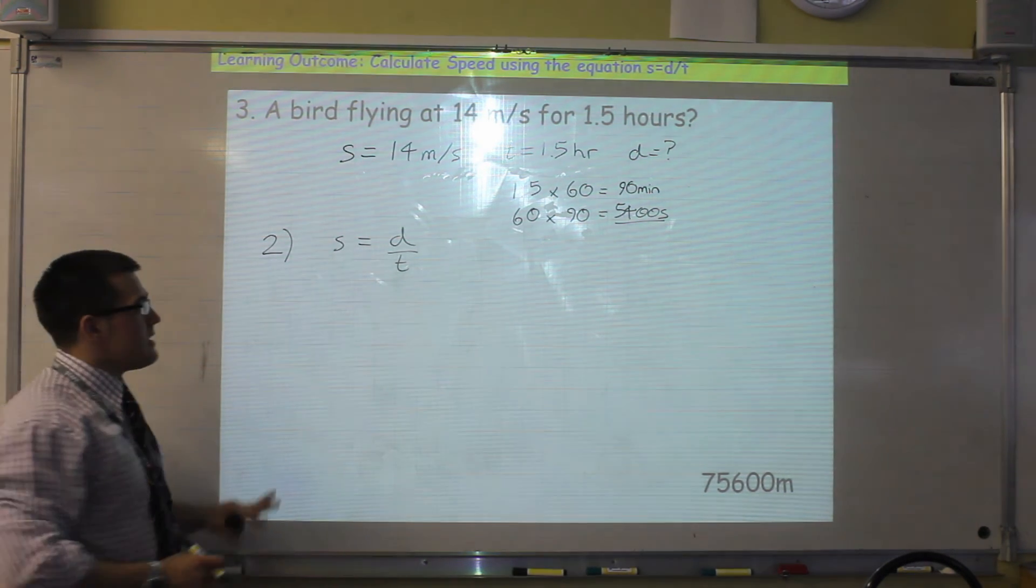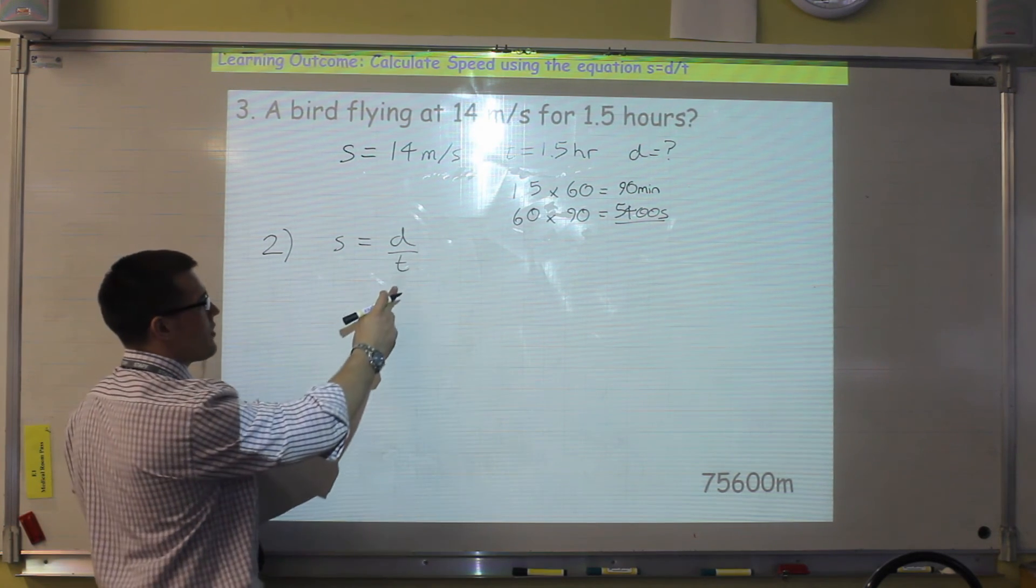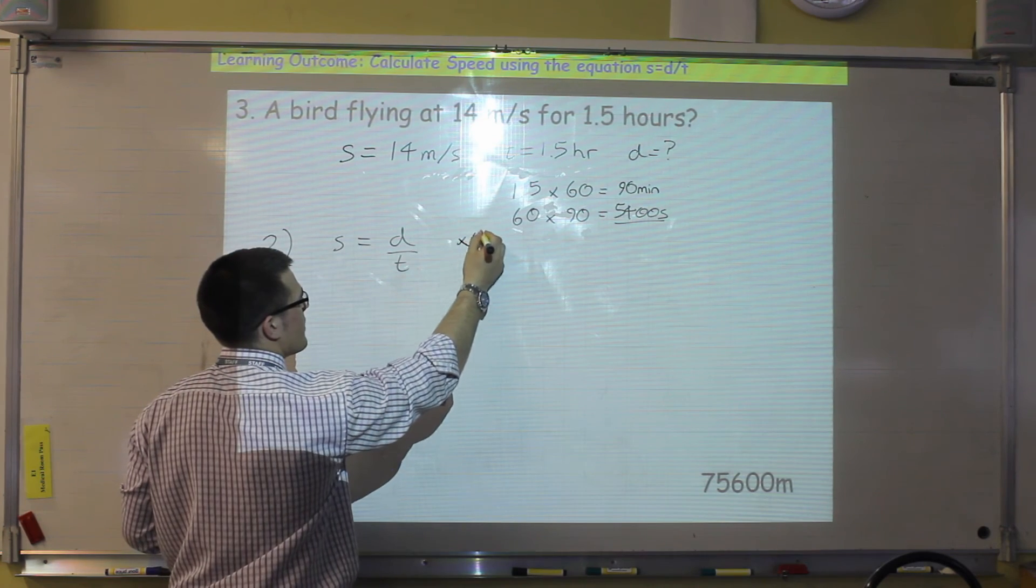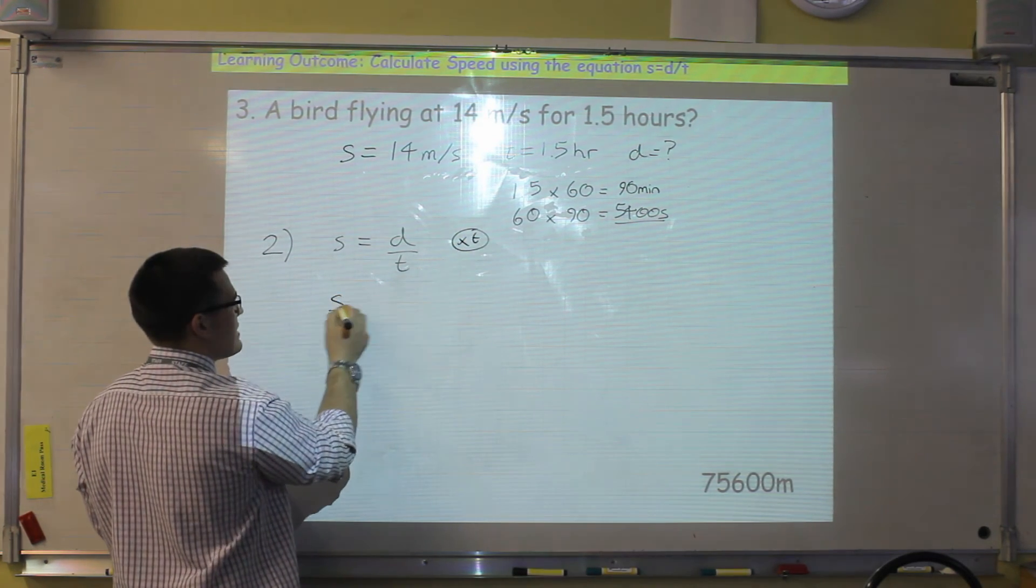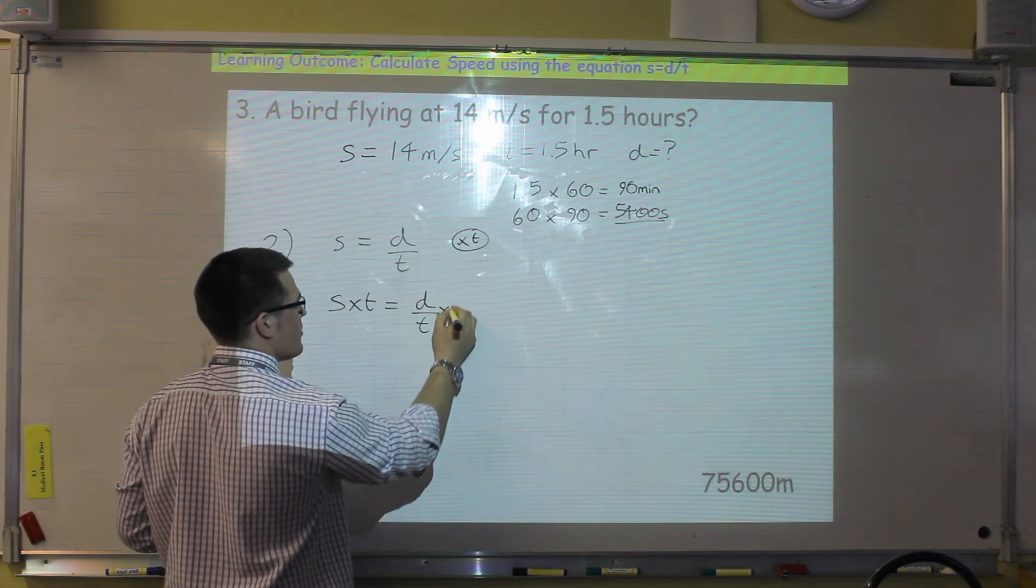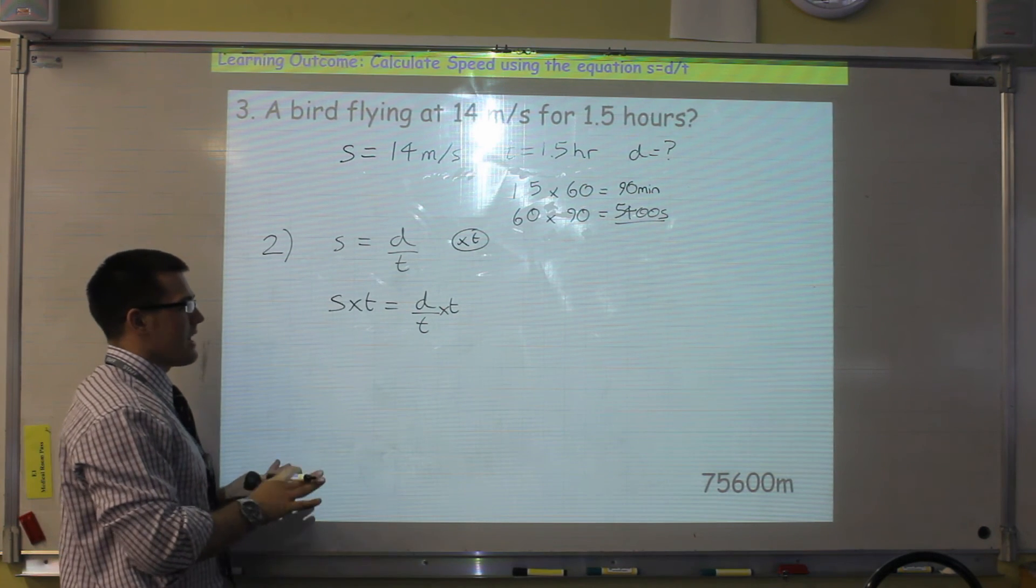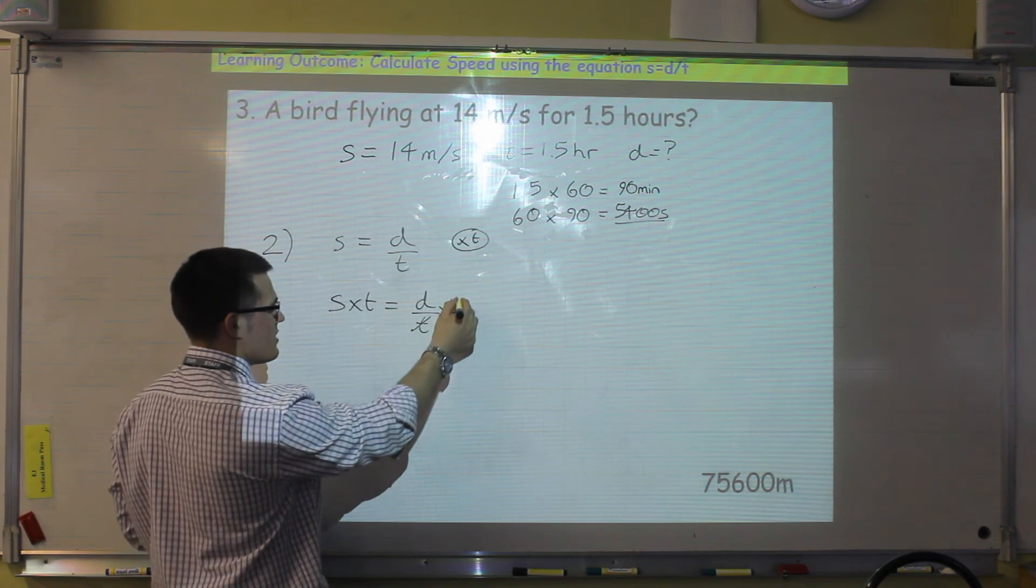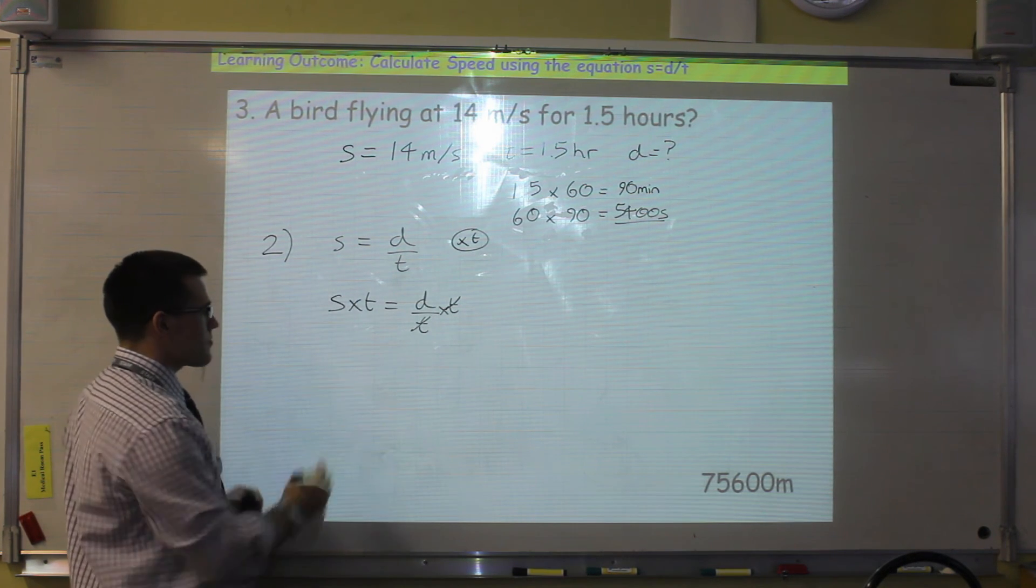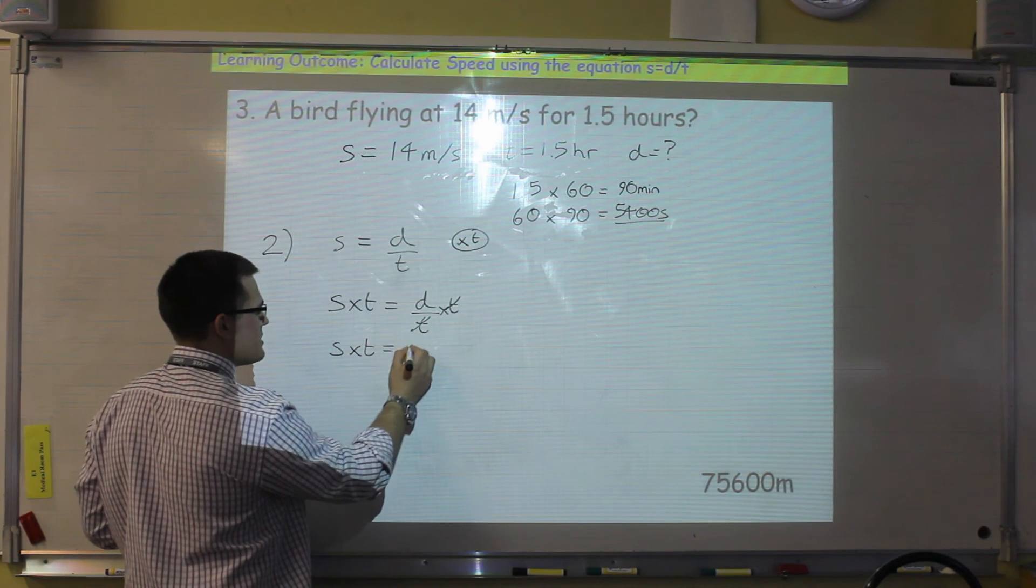The first way, is by cancelling out time on this side of the equation. So if I multiply both sides of the equation by time, what I will then get is speed multiplied by time, is equal to distance divided by time multiplied by time. What that allows me to do, is then to cancel out time on this side of the equation. Because t over t cancels out. And that will leave me with speed times time is equal to distance.